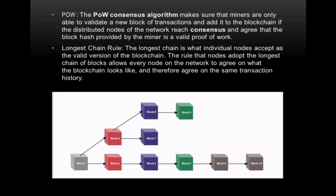The longest chain rule defines what individual nodes accept as a valid version of the blockchain. Nodes adopt the longest chain of blocks, allowing every node to agree on what the blockchain looks like and therefore agree on the same transaction history. For example, block one is created and broadcasted to everybody. Then people start creating block two based on the previous hash of block one. However, two miners might create two different blocks — block two and block four — at almost the same time.